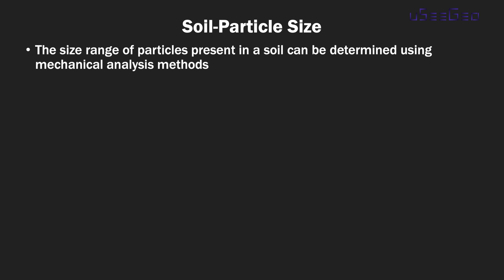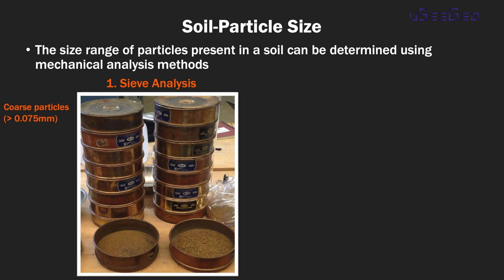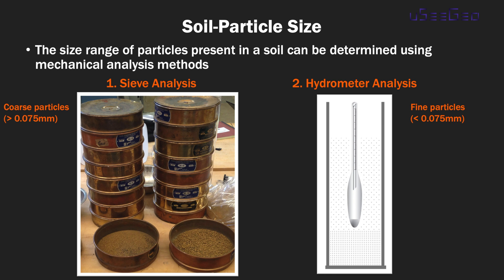To determine the size range of particles in the soil mass, we use mechanical analysis methods. There are two commonly used methods. The first is called sieve analysis, which is mostly for coarse particles larger than 0.075 mm. The second is called hydrometer analysis, used for fine particles smaller than 0.075 mm. More details about each method will be covered in separate videos.